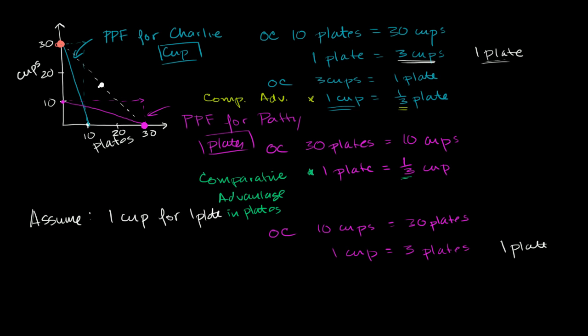What I want to do in this video is make sure we understand the difference between comparative advantage and absolute advantage. What we saw in the last video is that Patty had a comparative advantage in plates relative to Charlie because her opportunity cost of producing one plate was lower than Charlie's opportunity cost. Hers was one-third of a cup, his was three cups.